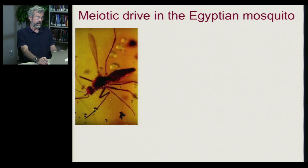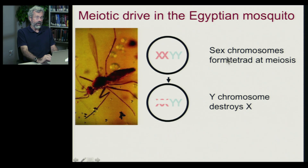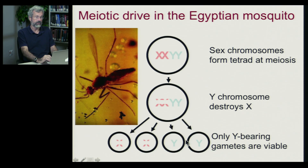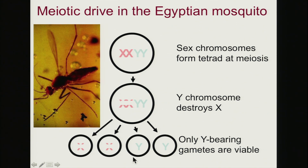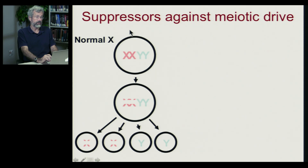In the Egyptian mosquito — shown here in amber as a pretty picture — we have the sex chromosomes forming a tetrad in meiosis, as we'd see in mammals. This Y chromosome has the nasty ability to destroy the X chromosome. At the point in meiosis where gametes are about to become haploid, the Y chromosome destroys the X chromosome in the germ cell, so only Y-bearing gametes are viable. This male mosquito can only have sons — he can never have daughters. This has led to selection for suppressor genes located on the X chromosome that protect against this killer Y behavior.